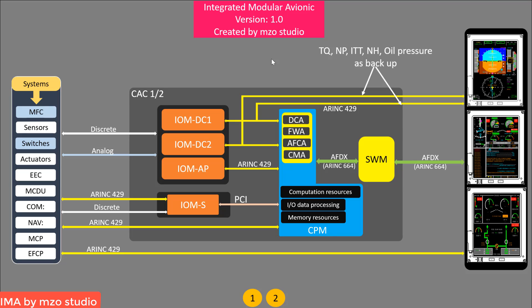Hello, today I am going to show you what is the Integrated Modular Avionics in use on the ATR 72-600. The main purpose of the IMA is to save weight and to reduce LRU count. For example, in the ATR 72-500 we have the autopilot flight guidance computer, but in the ATR 72-600 we just have the IOM module hosting the automated flight control application. This is the main reason to save weight.